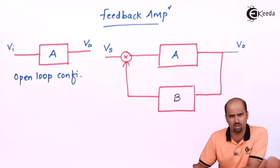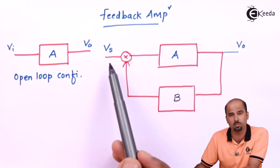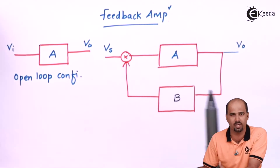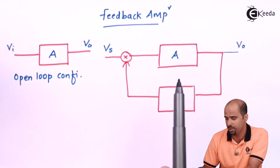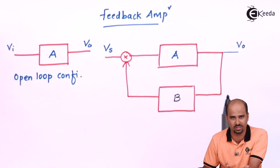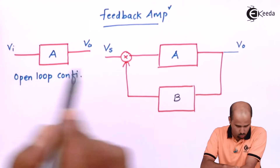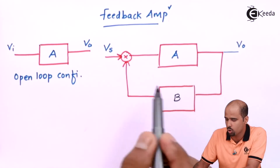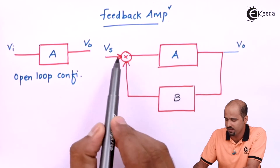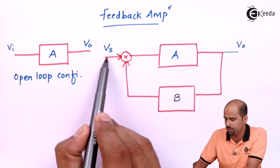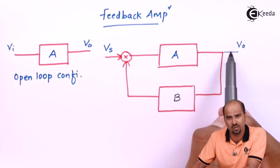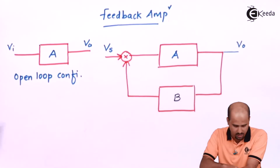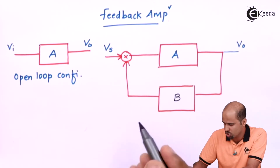There can be output voltage or output current, and there can be input current or input voltage, giving different topologies we will learn in the next videos. This arrangement is called a closed loop configuration, because starting from Vs, I reach Vo, and that Vo is fed back to the input side — forming a loop.